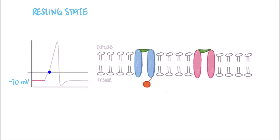During this initial depolarization caused by graded potentials, a very small portion of sodium channels would open their activation gates to prepare for the depolarization phase at threshold.